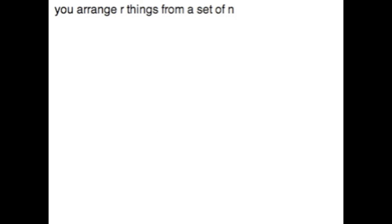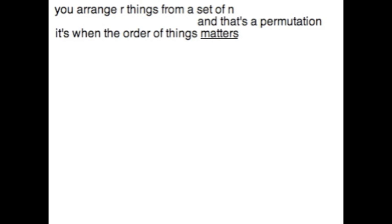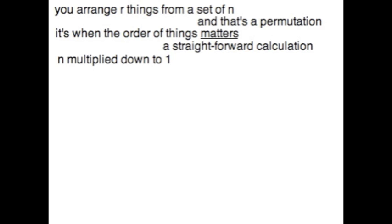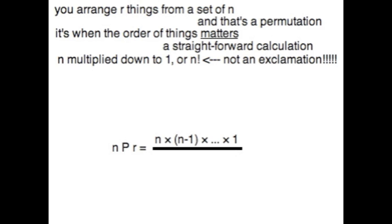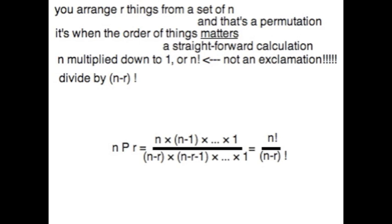You arrange r things from a set of n, and that's a permutation — it's when the order of things matters. A straightforward calculation: n multiplied down to one, or n factorial, divided by n minus r factorial. You'll have some cancellation.